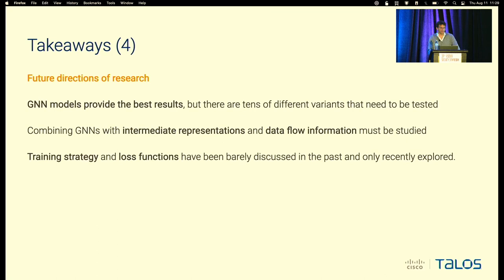Finally, what are the future directions for research? We found that graph neural networks provide the best results, but it is a very active area of research with many different variants that still need to be tested — we encourage the community to work on these. Second, combining graph neural networks with other features like intermediate representations and data flow information must be studied, as it can improve results. Finally, training strategies and loss functions have been barely discussed in the past, and only recently have some researchers started exploring them — and we found they are really important, as much as features and model selection.